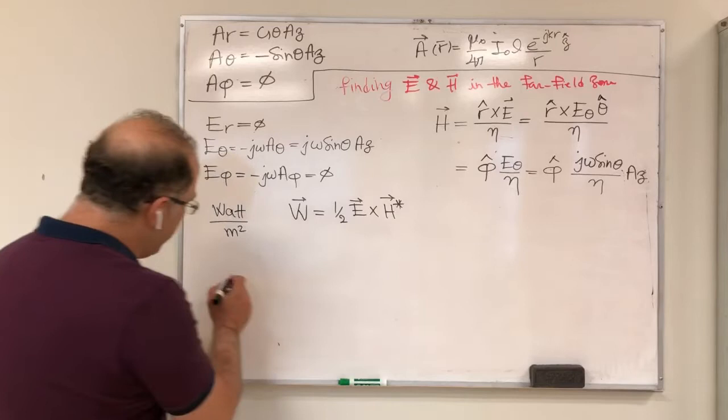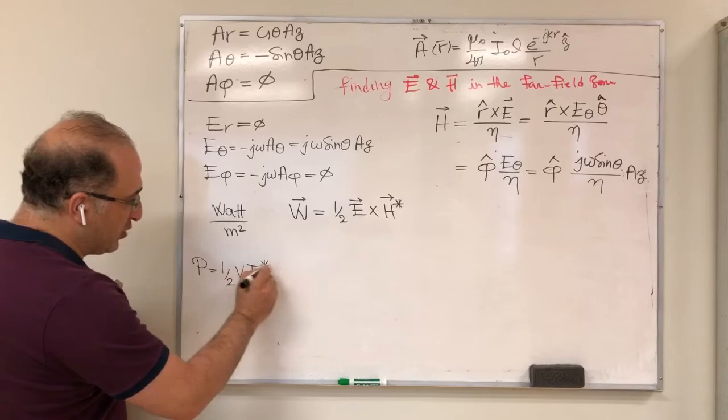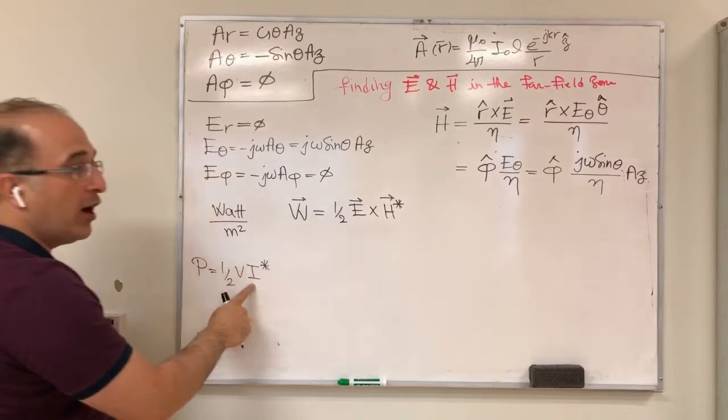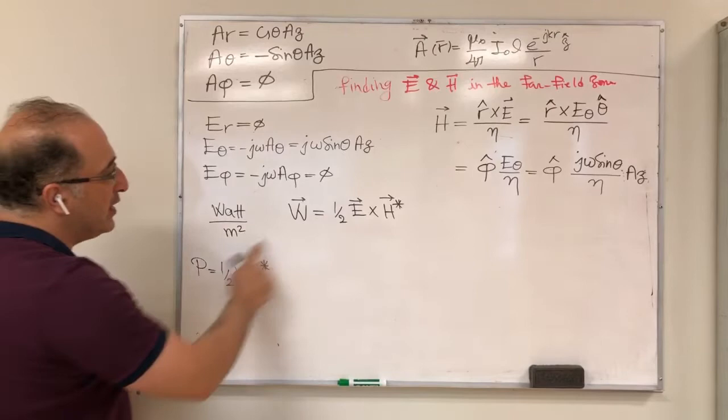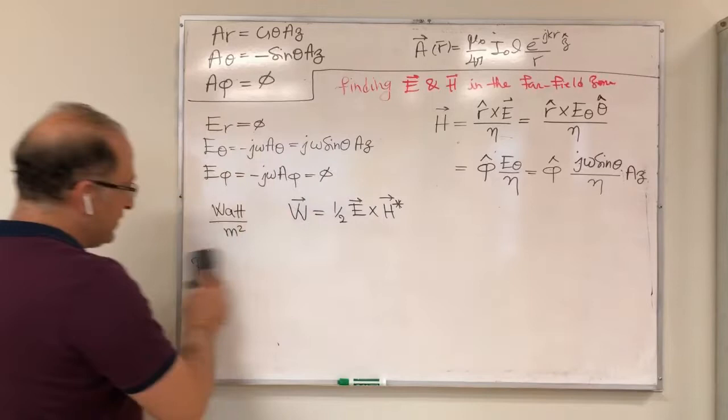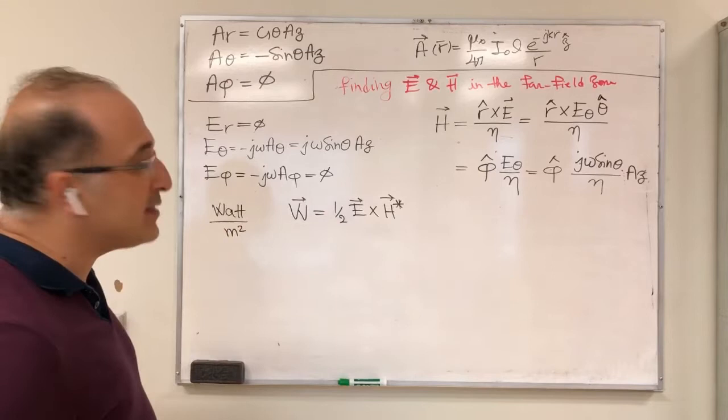Power density is in watts per meter squared — it tells you how much power is passing through an area in space. Power density is found by: W = ½ E × H*. This is analogous to circuit power ½ V I*, where V corresponds to E (volts/meter) and I corresponds to H (amps/meter), giving watts per meter squared.